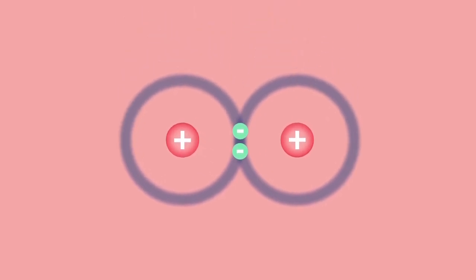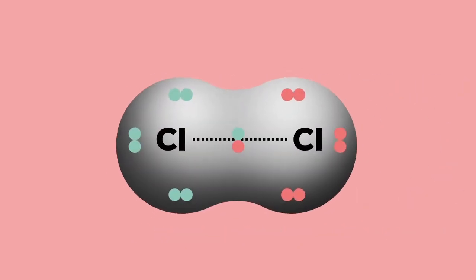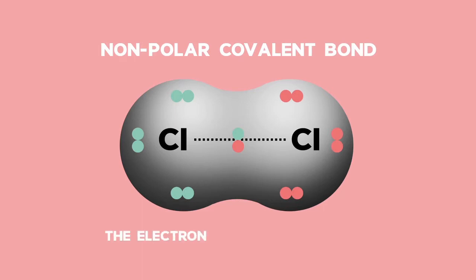When the electronegativities of the two atoms are the same, we say that the molecule has pure covalent bonds. This also results in the molecule itself being non-polar, as the electron distribution is even — in other words, they share evenly.